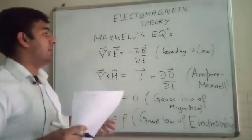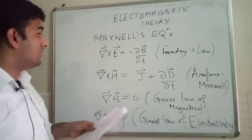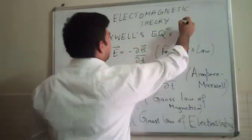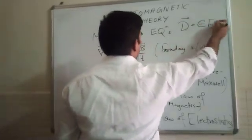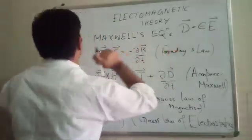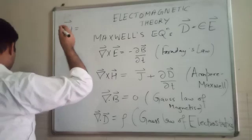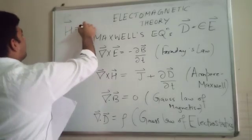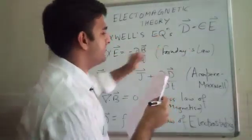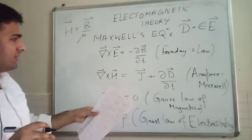Using these four Maxwell's equations, we can deduce and explain any experimental observation. Now, what are D and H? D is the electric displacement, given by epsilon times E, used when we are in a dielectric medium. H is the magnetic field intensity, given by B divided by mu, where mu is the magnetic permeability and epsilon is the electrical permittivity.